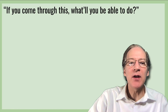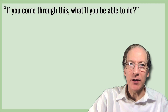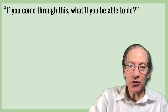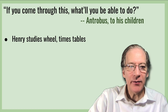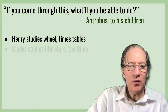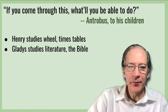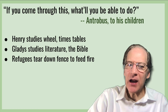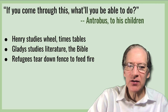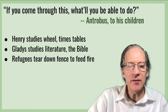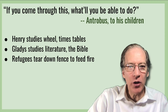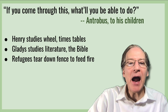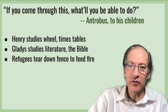Antrobus asks his children: 'If you come through this, what will you be able to do?' Henry studies the wheel and the multiplication tables, and we know that Gladys studies literature and the Bible. The refugees tear down pickets in the fence to feed the fire — and I think that's a very important symbol. Wilder is not talking about building fences; he asks these refugees to tear down fences so that all of humanity can survive, rather than hiding behind a fence that will protect just his own family.